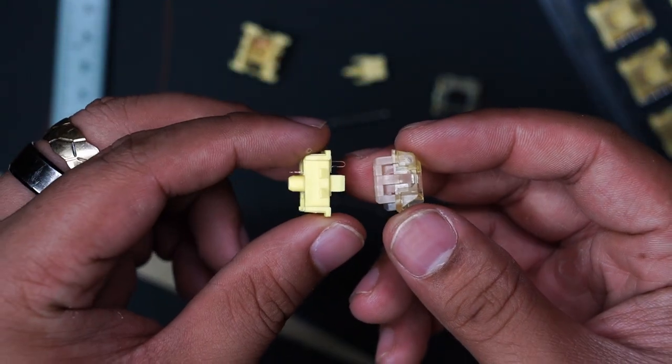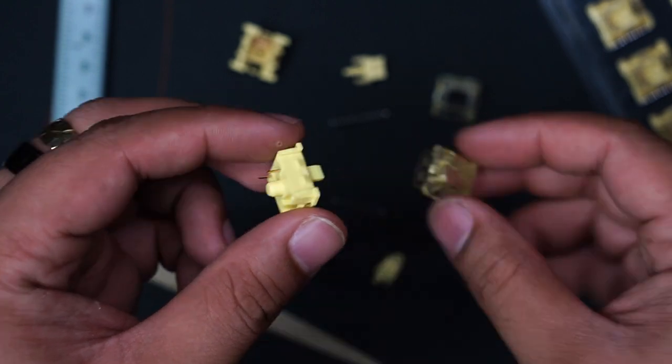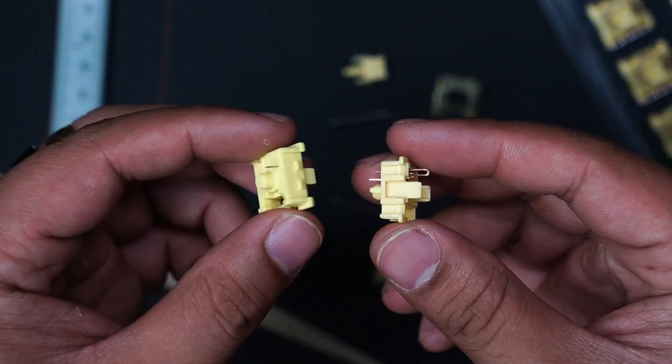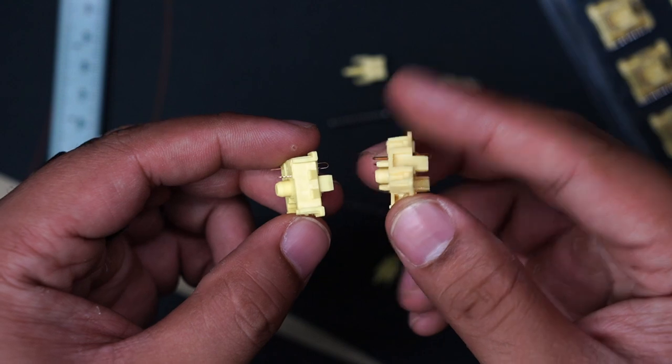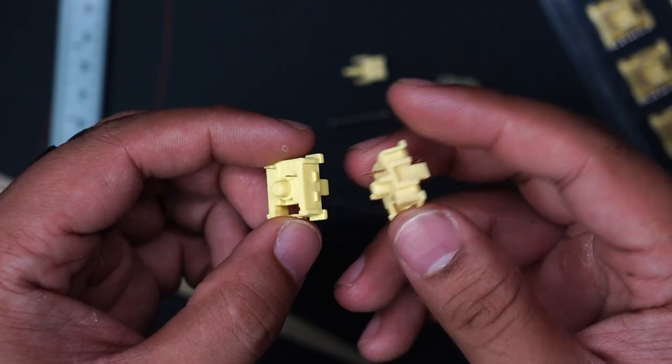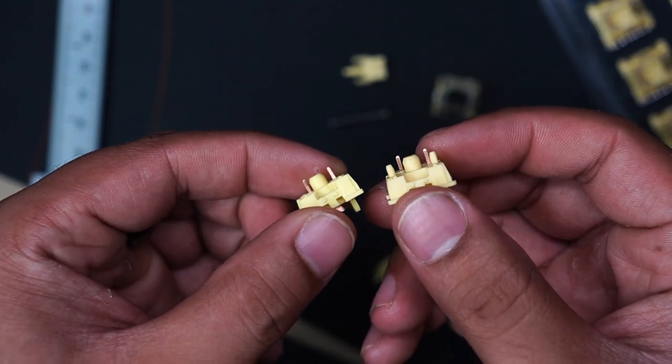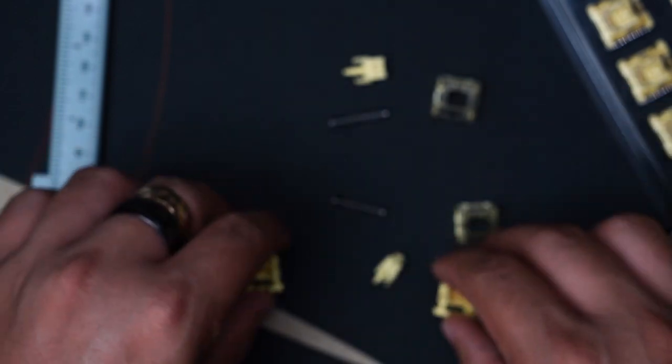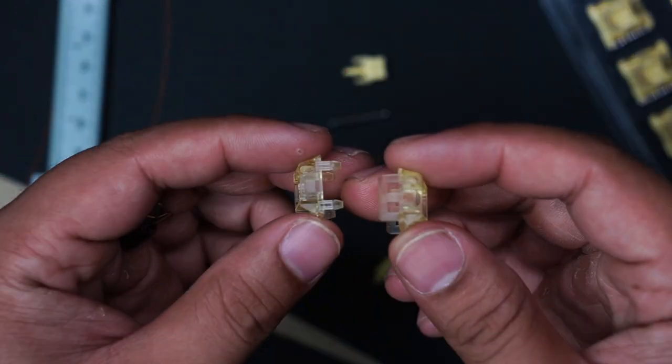It's such a welcome addition, to be honest. I'm not a big fan of the kale housing because of how hard they are to open sometimes. Not to mention the cherry style housing makes 5-pin possible. So yeah, definitely a plus.